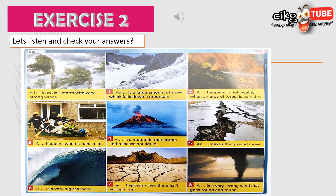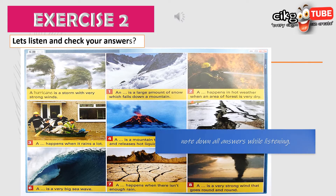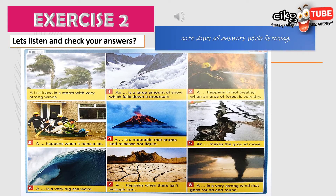Let's listen and check your answers. You can note down all answers while listening. Unit 3 vocabulary and listening — natural disasters, Exercise 2. A hurricane is a storm with very strong winds. An avalanche is a large amount of snow which falls down a mountain.